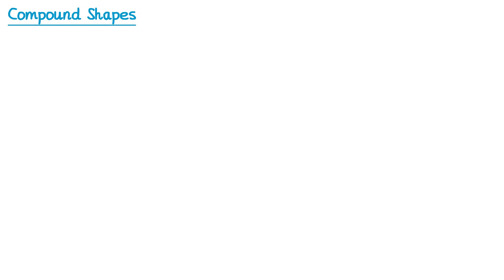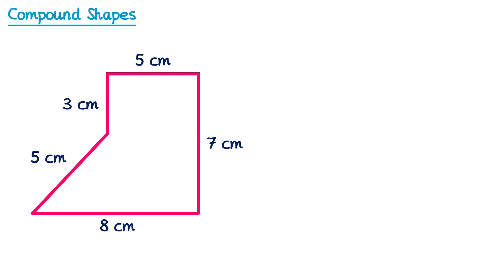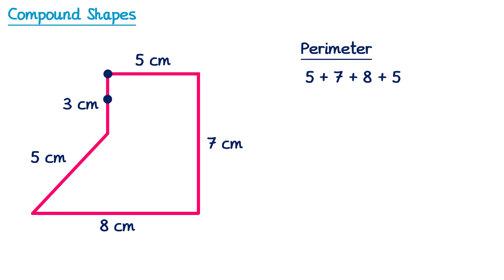Let's have a look at another problem. This time we have a compound shape, but it's not two rectangles. Let's begin with the perimeter. We have all of the lengths, so we can calculate the perimeter easily: 5 plus 7 plus 8 plus 5 plus 3. If you add all of these together you get 28 centimeters.